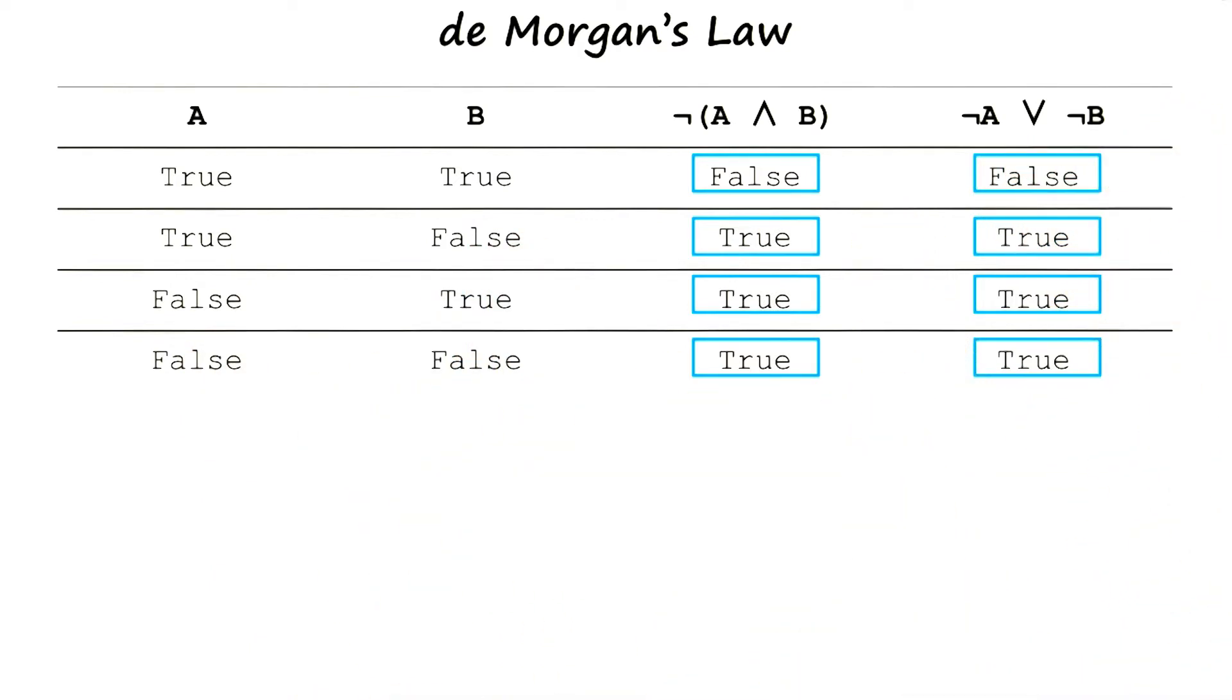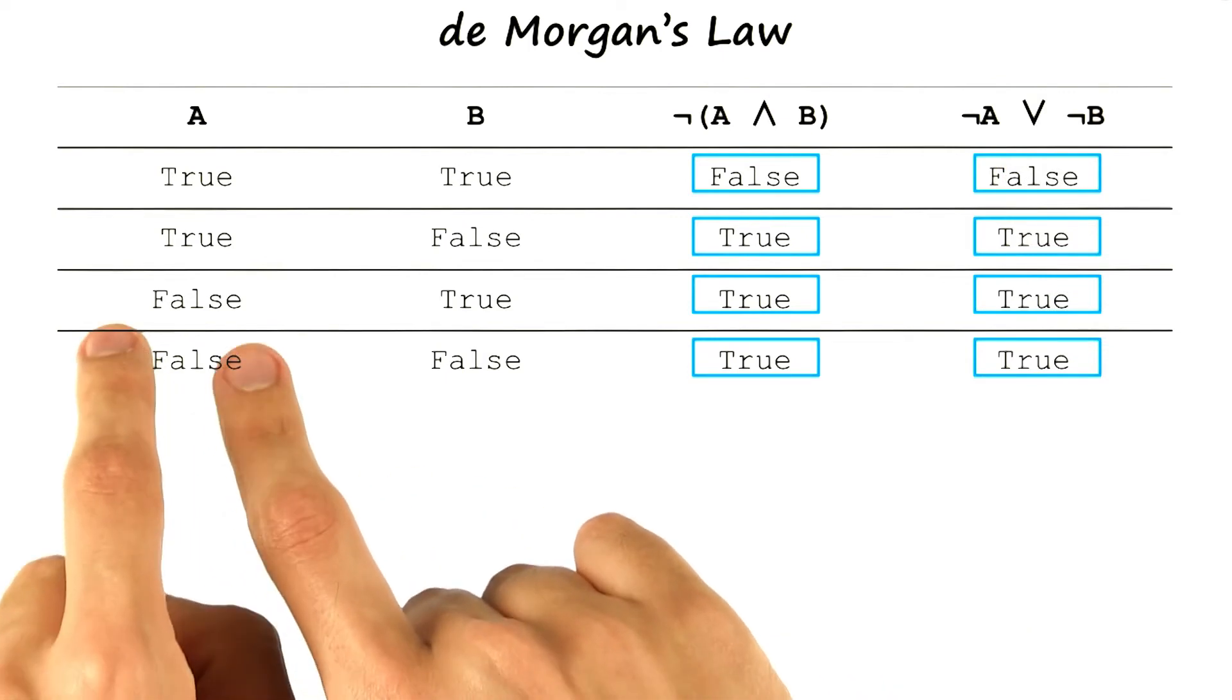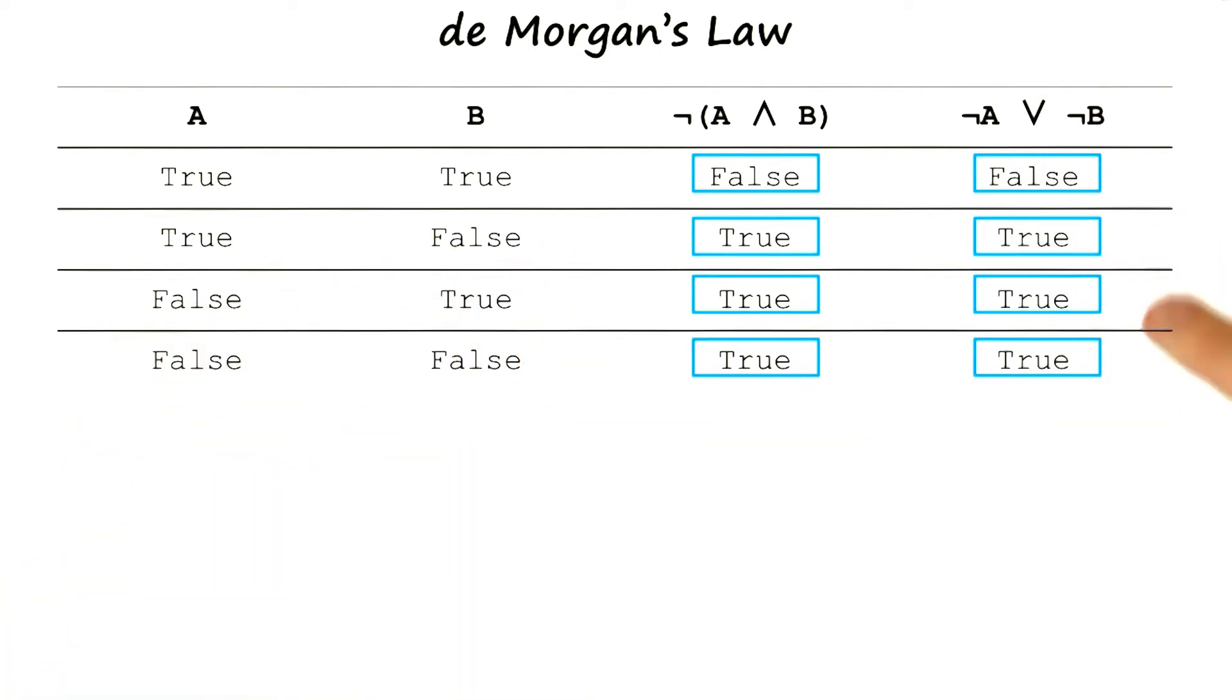Not A or not B becomes true whenever either of them are false, because the false value will be flipped by that negation. That's all that matters because this is an or. We see A is false here and here, B is false here, so those are all true. When they're both true, this becomes false because both truth values are flipped.